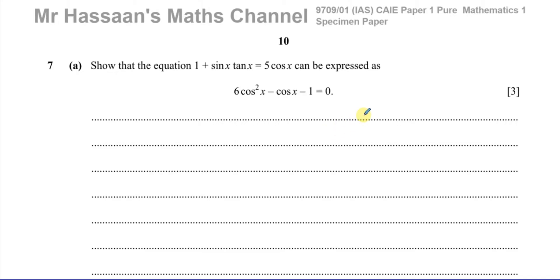The question here is about trig identities and equations. Part A asks us to show that the equation 1 plus sine x times tan x equals 5 cosine x can be expressed as 6 cosine squared x minus cosine x minus 1 equals 0.